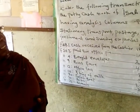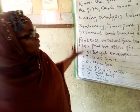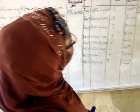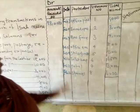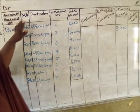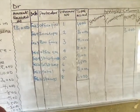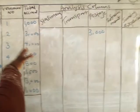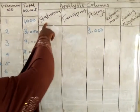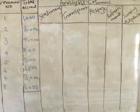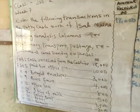To prepare the Petty Cash Book you need the following information to post into the Petty Cash account. You have to rule it and divide it into two sides — the debit side and the credit side. On the debit side we have: amount received, date, particular, voucher number, and total account. The credit side is called the analysis column, where we have columns headed: stationery, transport, postage, refreshments, and sundry expenses.